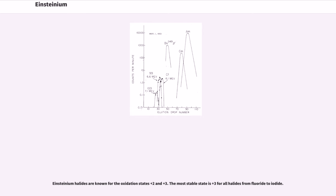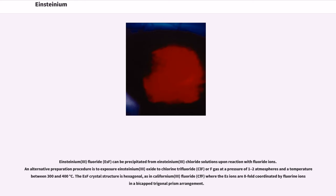Einsteinium halides are known for the oxidation states plus-2 and plus-3. The most stable state is plus-3 for all halides from fluoride to iodide. Einsteinium-3 fluoride, EsF3, can be precipitated from Einsteinium-3 chloride solutions upon reaction with fluoride ions. An alternative preparation procedure is to expose Einsteinium-3 oxide to chlorine trifluoride, ClF3, or F2 gas at a pressure of one to two atmospheres and a temperature between 300 and 400 degrees Celsius. The EsF3 crystal structure is hexagonal, as in californium-3 fluoride, CfF3, where the Es-ions are eightfold coordinated by fluorine ions in a bi-capped trigonal prism arrangement.